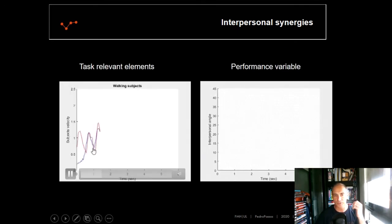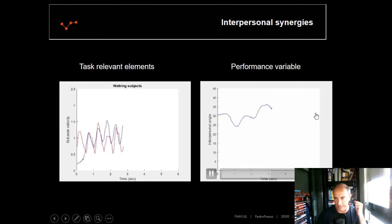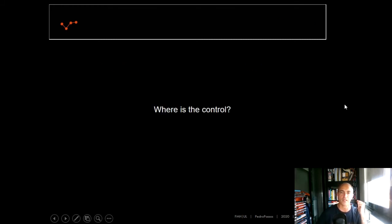So if we plot, after we collect the data, the positional data of the players, if we plot the walking subject's velocity, we can see here, more or less, the adjustments of subject 1 regarding subject 2, and they need to adjust to each other to stabilize the performance variable, the angle between them. So again, where is the control?